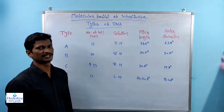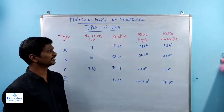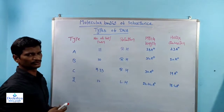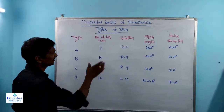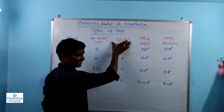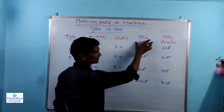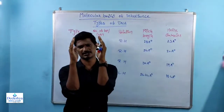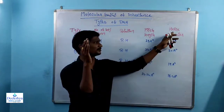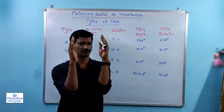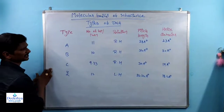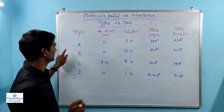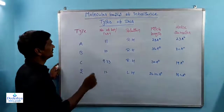Coming to types of DNA: based on number of base pairs per turn, direction of rotation (clockwise or anti-clockwise), pitch length, and helix diameter, DNA is classified into four types: A-DNA, B-DNA, C-DNA, and Z-DNA. Always, DNA has a double helical structure.